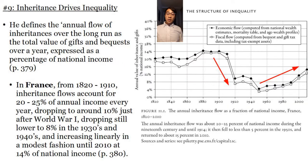Probably the most significant part of Piketty's book is his discussion of wealth inheritance. He defines the annual flow of inheritances over the long run as the total value of gifts and bequests over a year expressed as a percentage of national income. In France from 1820 to 1910, inheritance flows accounted for 20 to 25% of annual income every year, dropping to around 10% just after World War I, dropping still lower to 8% in the 1930s and 1940s, and increasing linearly in a modest fashion until about 2010, sitting at 14% of national income.